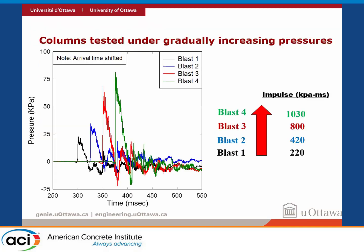These are typical shock waves we generated and used in the tests. To get more data, we tested the columns under gradually increasing pressure. So you have blast one, blast two, blast three, blast four — all with the same driver pressure and pretty much the same positive phase duration. What changes is the peak reflected pressure, which gets gradually higher, so the area under the curves — the impulse — increases from 220 all the way up to 1,030 kilopascal-milliseconds.